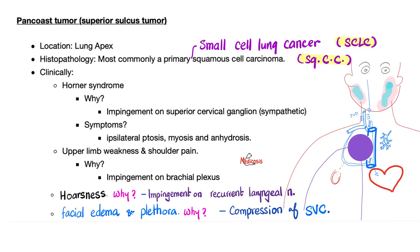Also, this pressure on the brachial plexus, or pressure on the phrenic nerve, can lead to shoulder pain. Hoarseness of voice, or dysphonia, can also happen because of pressure on the recurrent laryngeal nerve. Facial edema and plethora can happen due to compression of the superior vena cava or the brachiocephalic vein.